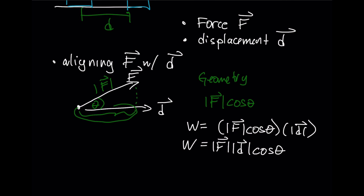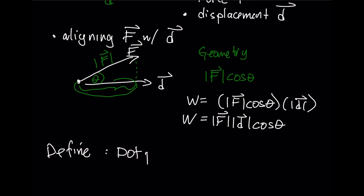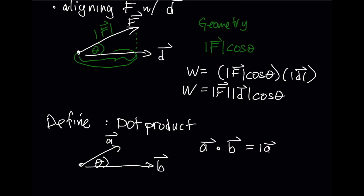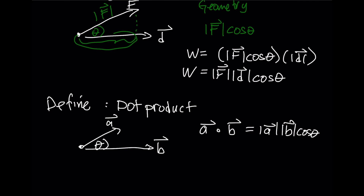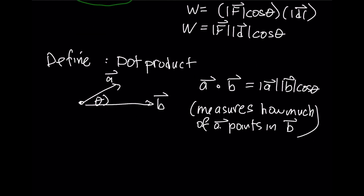Concepts like this led mathematicians to define a special way to multiply two vectors that produces this result — something we call the dot product. If I've got two vectors A and B with some angle between them, the dot product, written as A dot B, is the length of A times the length of B times the cosine of the angle between them. The dot product measures how much of A points in the direction of B. Geometrically, we're shining a flashlight down and picking out the shadow length, which we then multiply by the length of B.